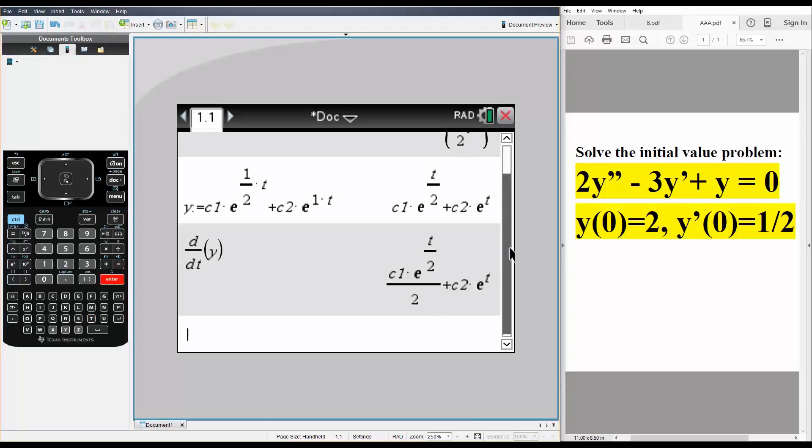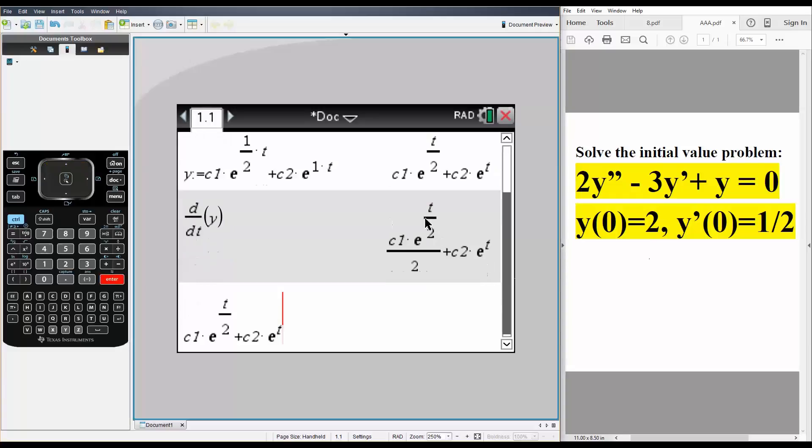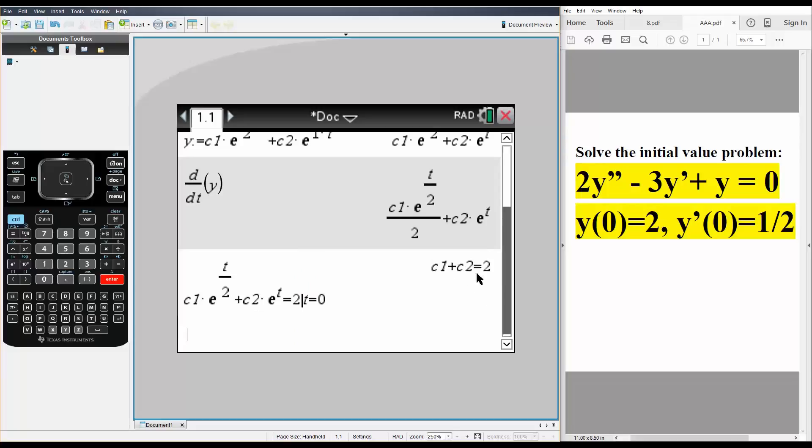And we now will plug in our values and so we have two equations. We have y prime and we have y. So we'll first do this one. So we select this, we say this is going to equal 2. And then we do ctrl equal set. We're setting t is equal to 0, and this is one equation that we have.